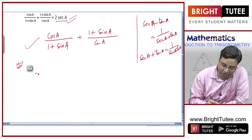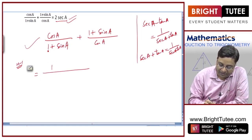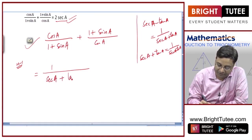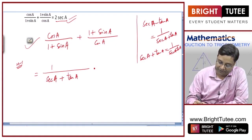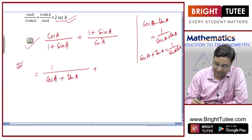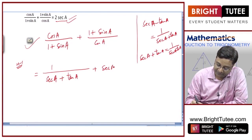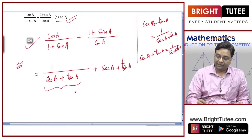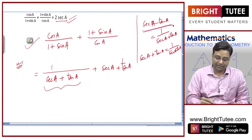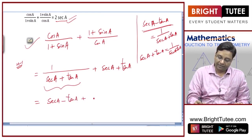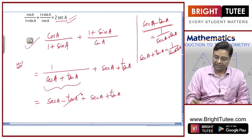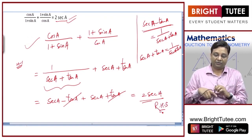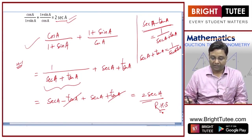So the expression becomes one/(secA + tanA) plus (secA + tanA). Recognizing that 1/(secA + tanA) = secA − tanA (from the identity), this becomes secA − tanA + secA + tanA. Tan A cancels, leaving 2secA, which is the right-hand side.